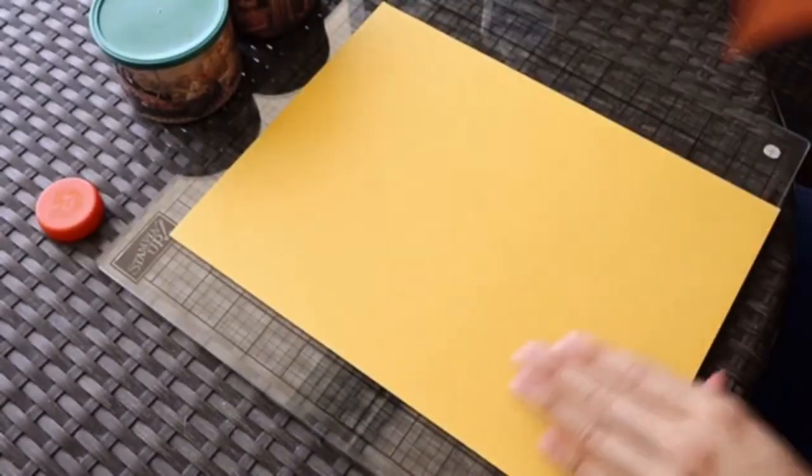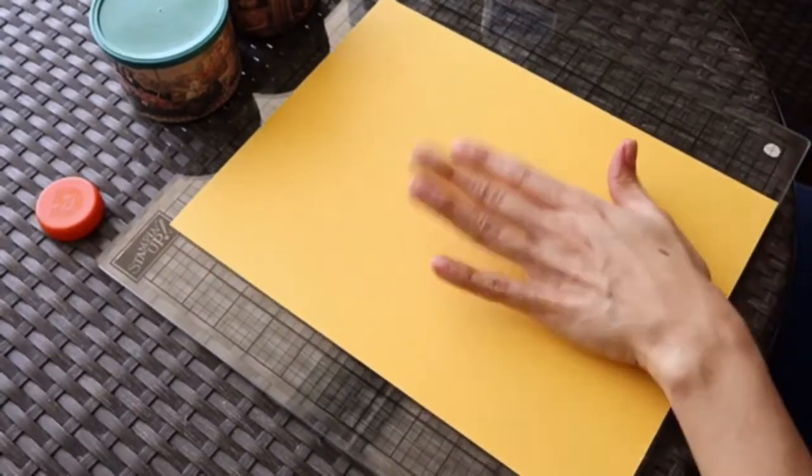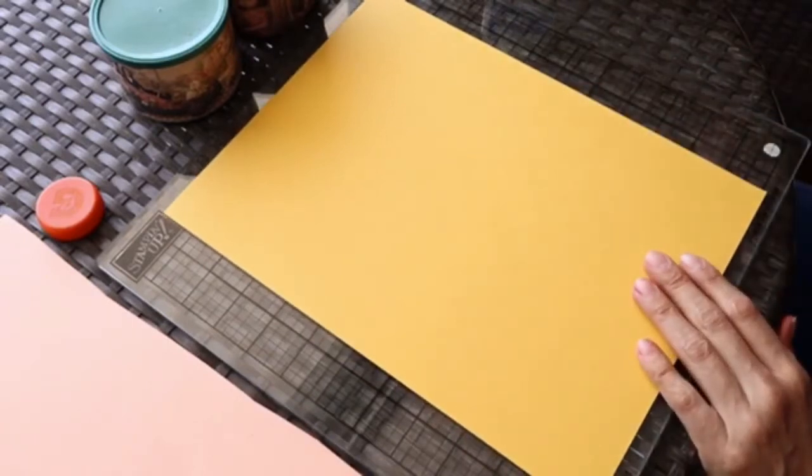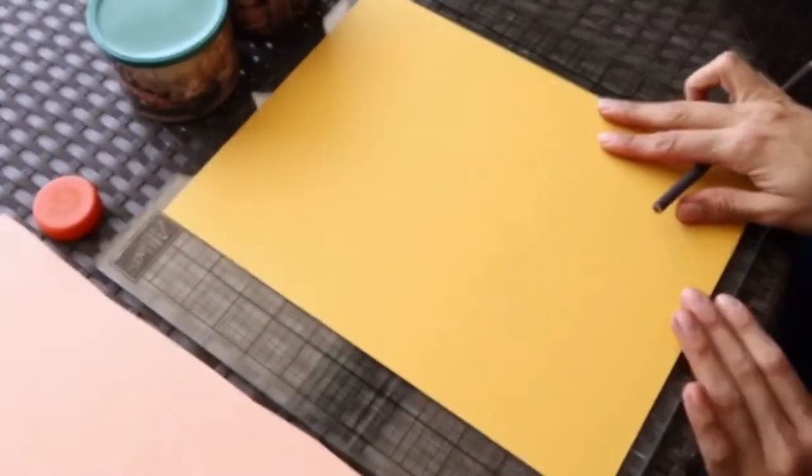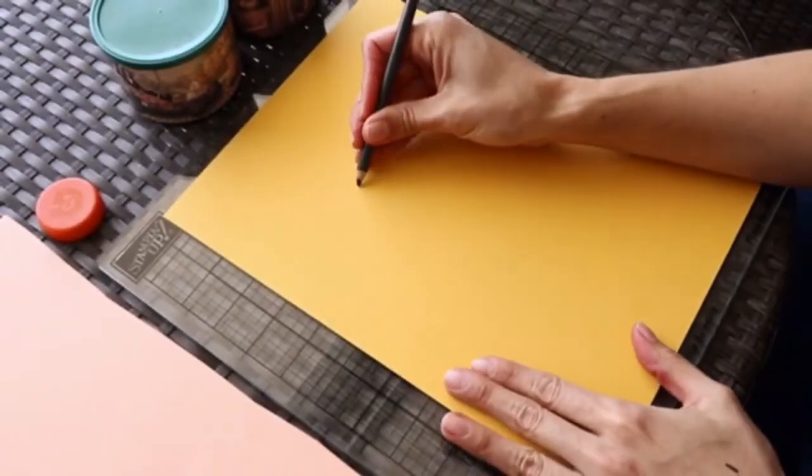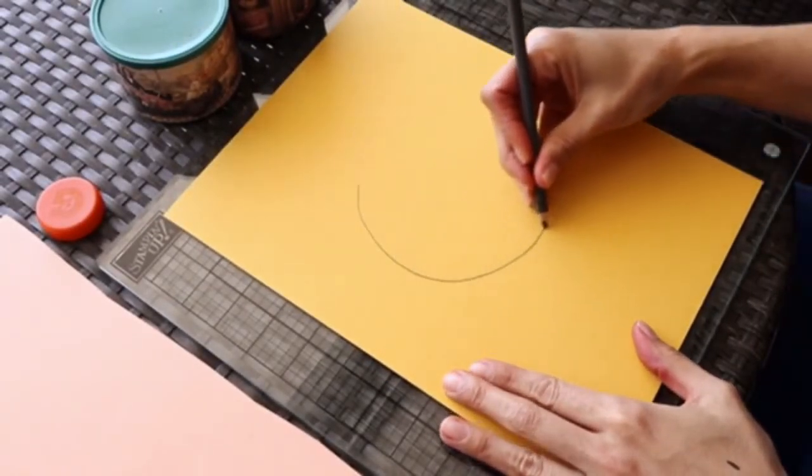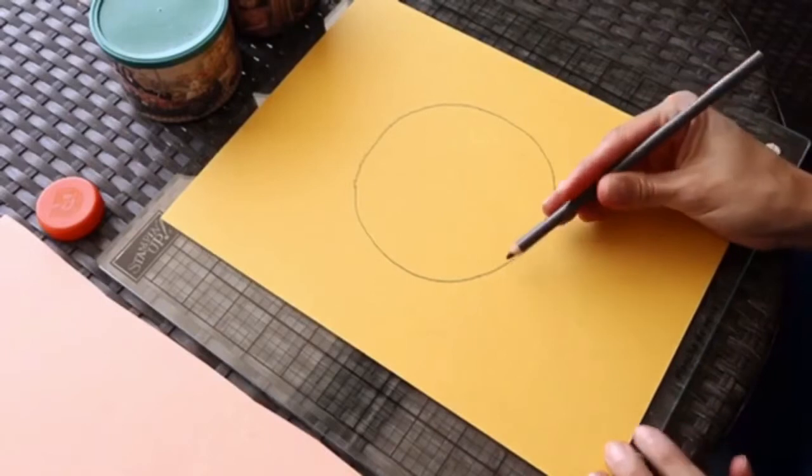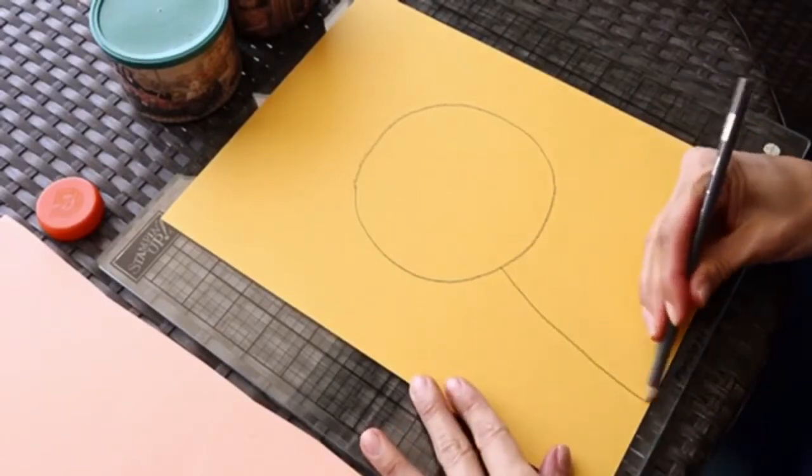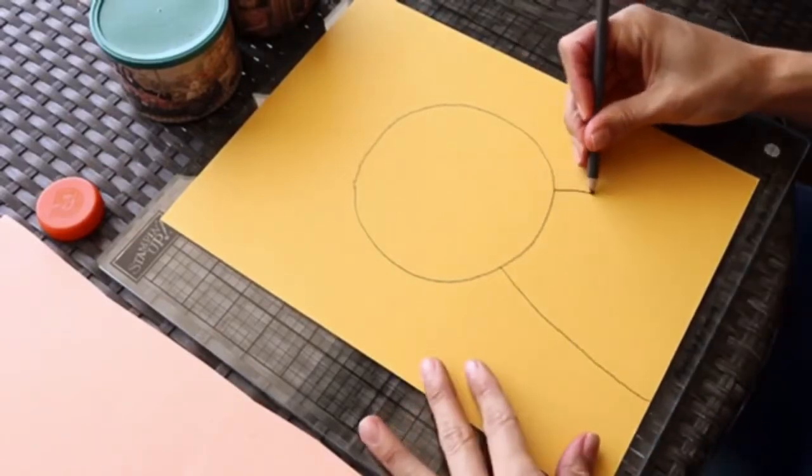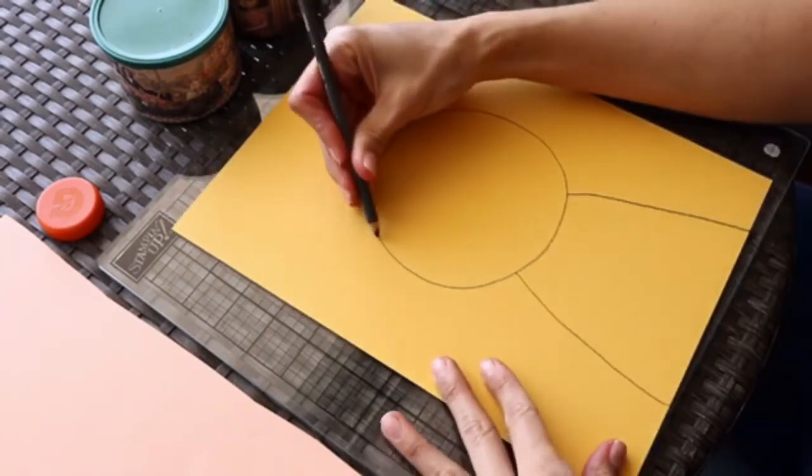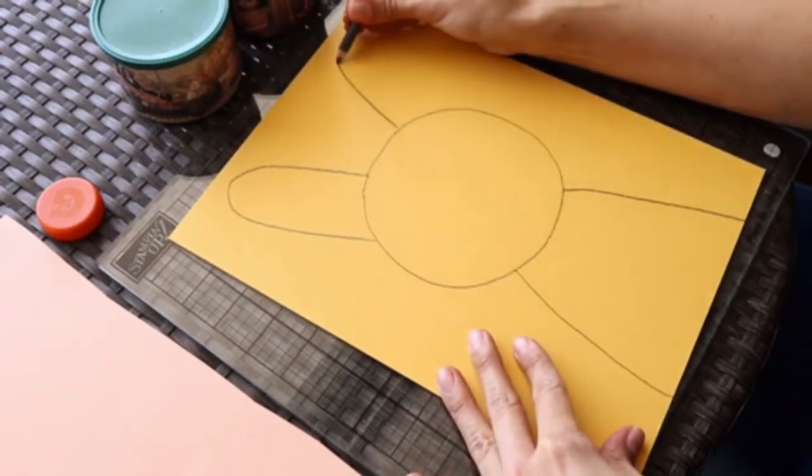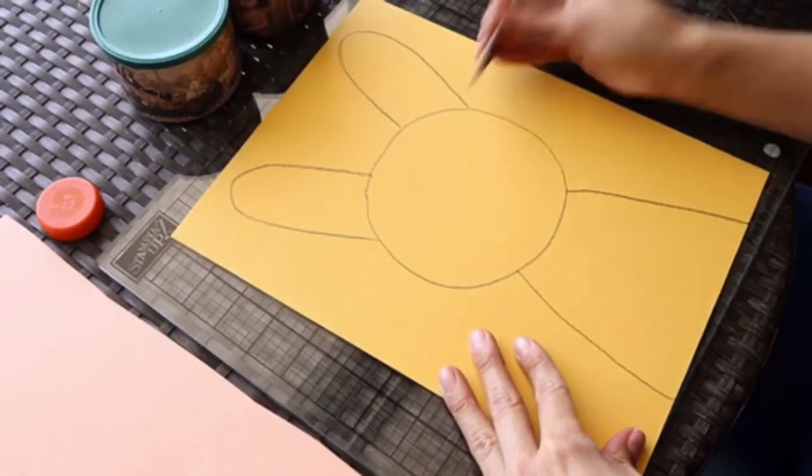Okay, so I have already my base paper. I want to work with the yellow paper. Before we start gluing or putting anything, we are going to draw the bunny silhouette. So we're going to start by making a circle very gently. It doesn't have to be a perfect circle. Then we're going to bring this line down to have like part of a body, and we're going to make the ears of the bunny.